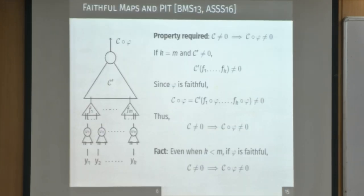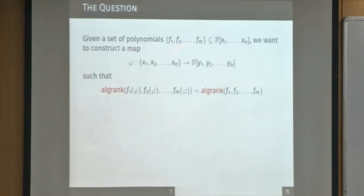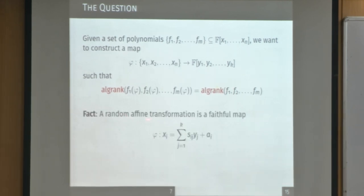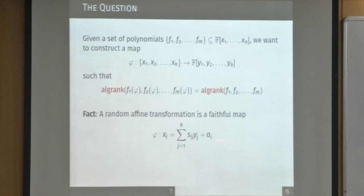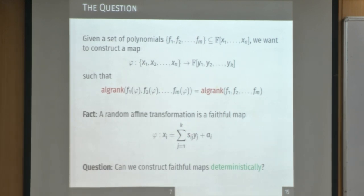Now that we know what faithful maps are and how to use them, we look at how to construct them. You want a map φ mapping each x_i into k-variate polynomials such that the algebraic rank after substituting φ equals the algebraic rank of the original polynomials. It turns out that if φ is a random affine transformation — where s_{ij}'s and a_i's are new variables assigned random values — then this is a faithful map. The question then becomes: can you construct them deterministically?